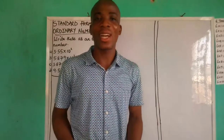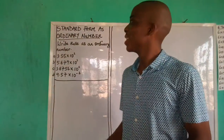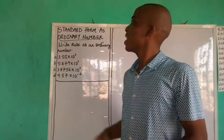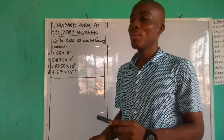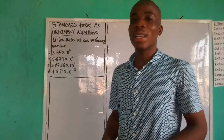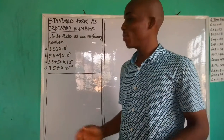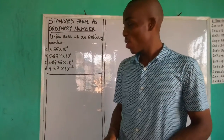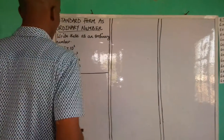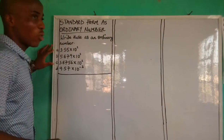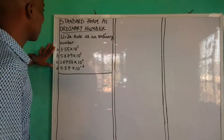Welcome back to my channel, guys. This one is on how to write standard form as an ordinary number. It's very, very simple. So we have some problems here to write as ordinary numbers.